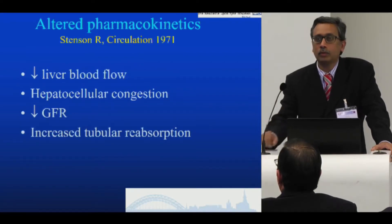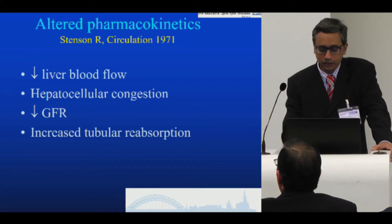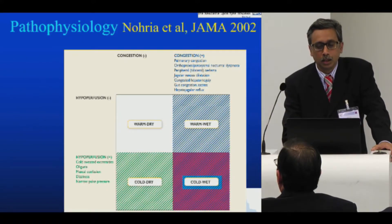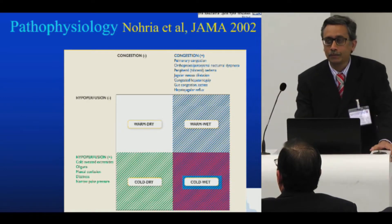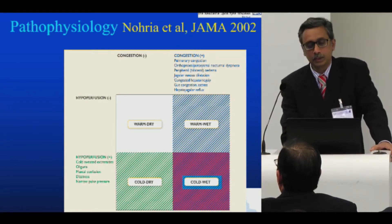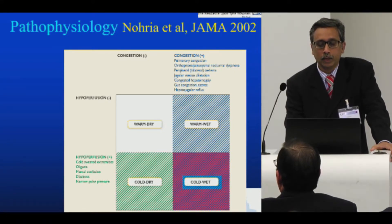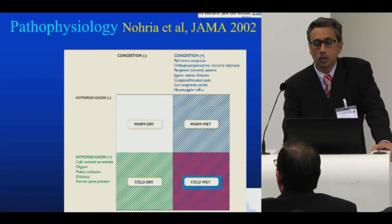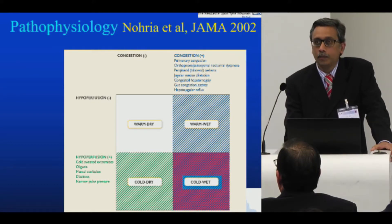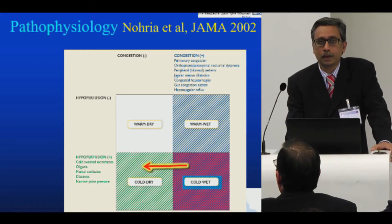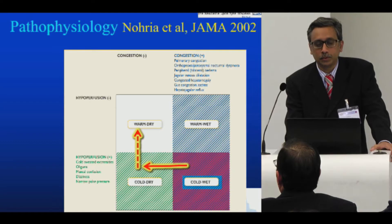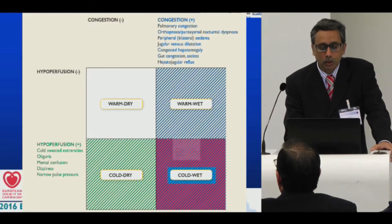They also have altered pharmacokinetics because of hepatorenal dysfunction. Heart failure patients usually have two main problems: hypoperfusion and congestion. A lot of the patients we tend to see are very hypoperfused and congested — the cold and wet group. The aim of pre-optimization is to try and get them into the cold and dry group if possible, and then try hard to get into warm and dry, but this is easier said than done.